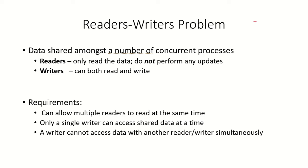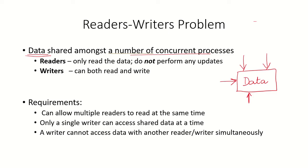So what exactly is the readers writers problem? Let's suppose we have some data which is shared amongst a number of concurrent processes. Now these processes can be of different types. Some processes can be only readers — that means these processes will only read the data. They will not perform any update or modification on this data. So suppose if we have reader 1 and reader 2, these processes are simply accessing the data and reading it, not performing any modification to it.